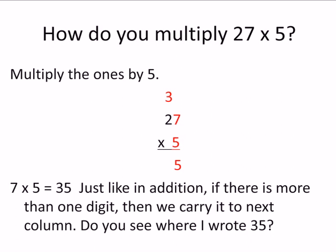See where I wrote 35? We can find the 30 — I wrote the 30 in the 10's column, up above the 10's column. So that's similar to addition. In addition it's always 1, but when you multiply, sometimes it can be a big number.